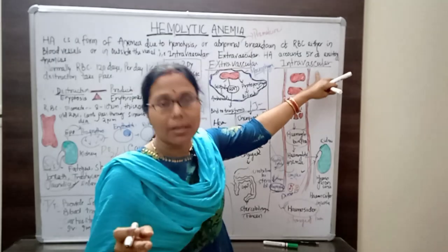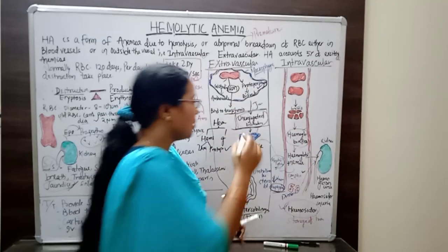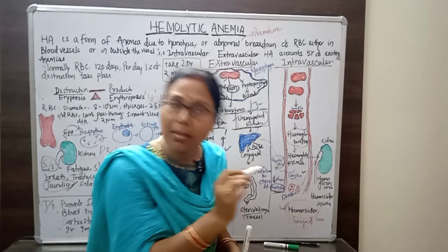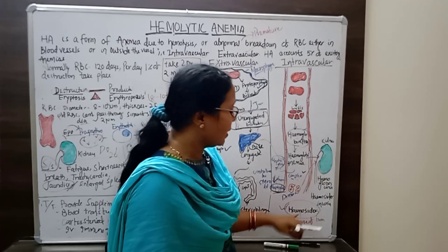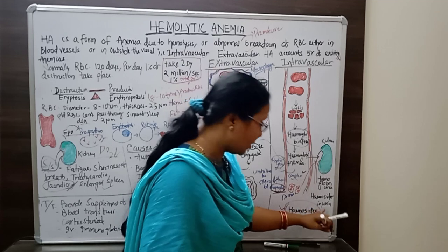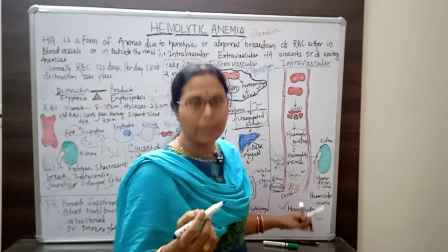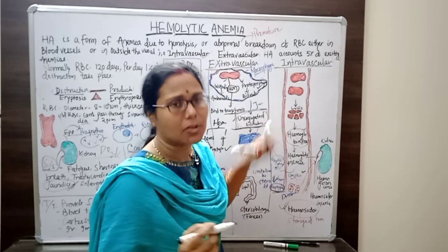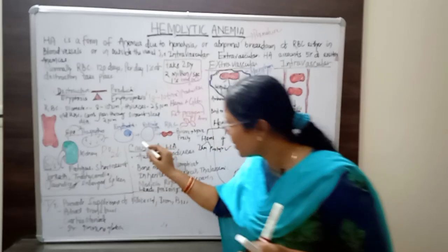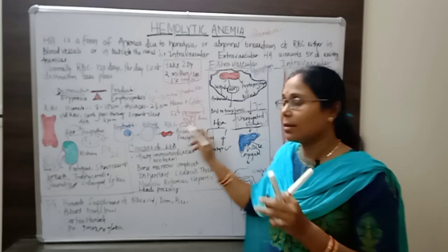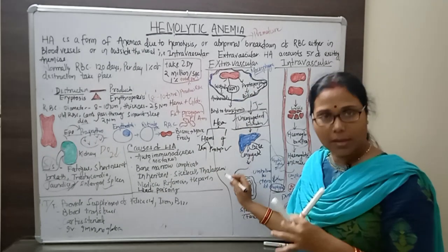To summarize the two types: in extravascular hemolysis, unconjugated bilirubin increases, leading to jaundice; in intravascular hemolysis, hemosiderinuria — excess stored iron found in the urine — is the key indicator. These findings help confirm whether the hemolytic process is intravascular or extravascular in origin.